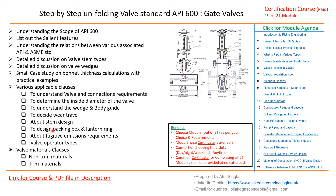Then we'll try to look into various clauses which are important for packing box and lantern ring. Then fugitive emission requirements, which are a new addition to API 600. Then various types of valve operators. In the end, we'll try to understand valve material clauses.